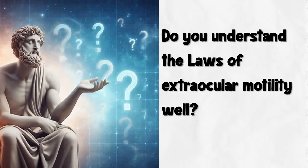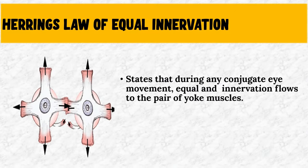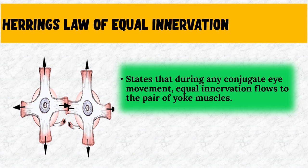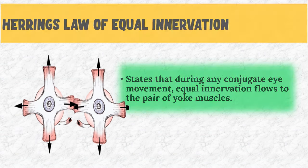Understanding the laws of extraocular motility is very important to interpret the Hess chart. We shall discuss Herring's law of equal innervation and Sherrington's law. Herring's law of equal innervation states that during any conjugate eye movement, equal innervation will flow to the pair of yoke muscles.